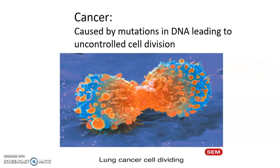Cancer is caused when cells accumulate many mutations in the DNA. These mutations cause the cell to no longer be able to control cell division, so that cells mutate and divide uncontrollably, causing large masses in inconvenient places in the body. Those masses can also lead to destruction of surrounding tissue. That is it for this lecture.